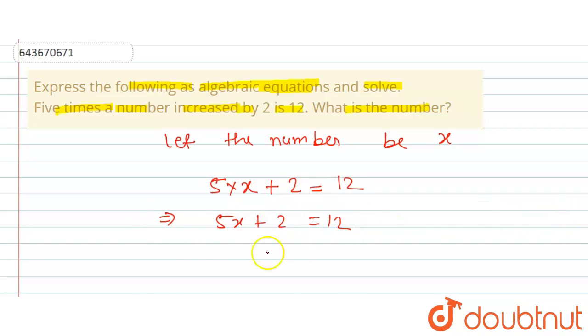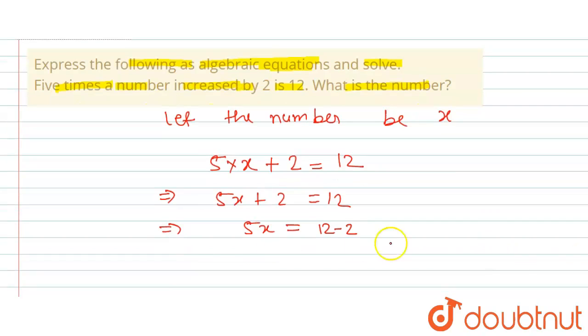How can we simplify this? 5x as it is, and 2 will go on the right hand side. So this will be minus 2. The sign will be changed on the right hand side.